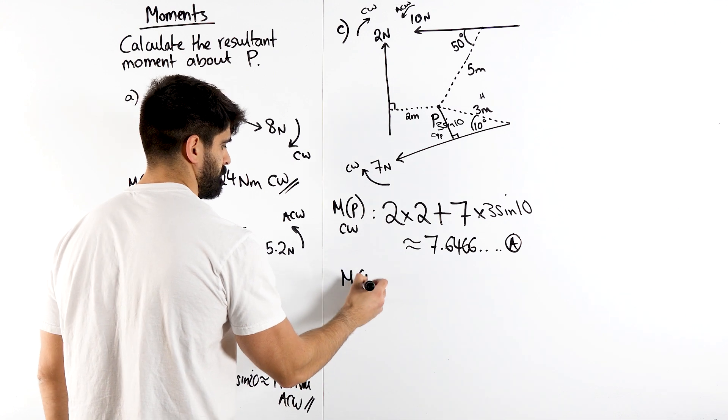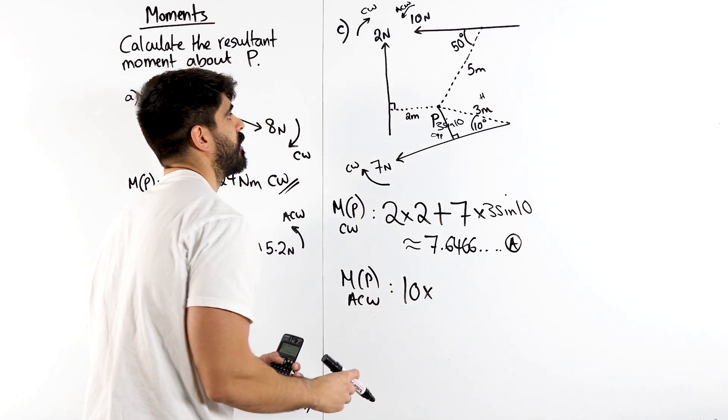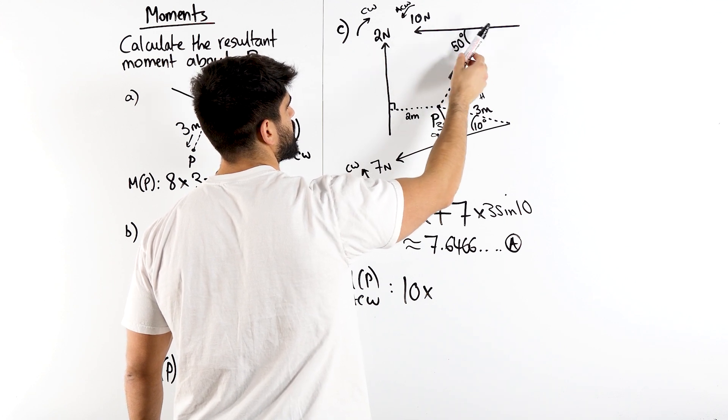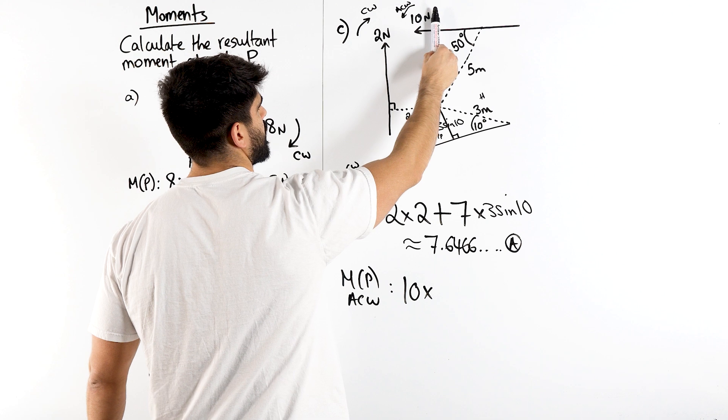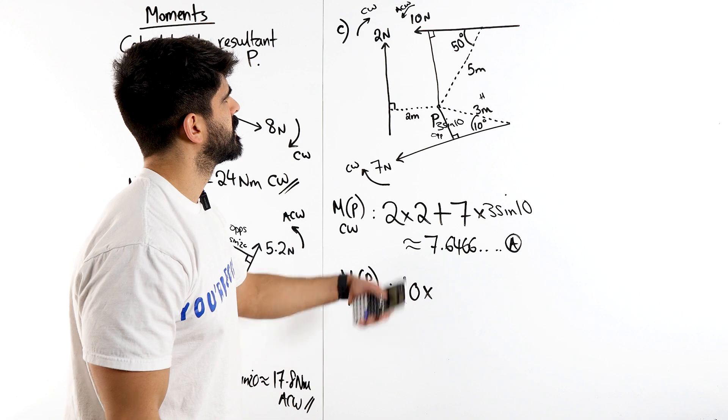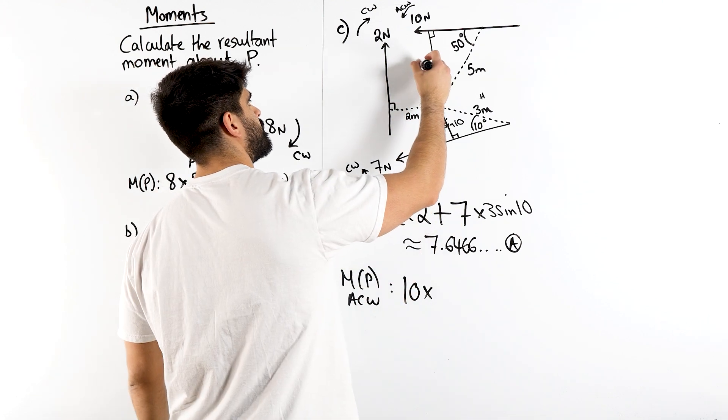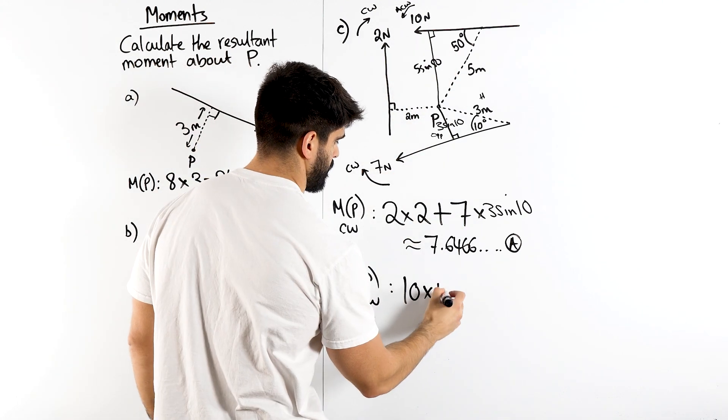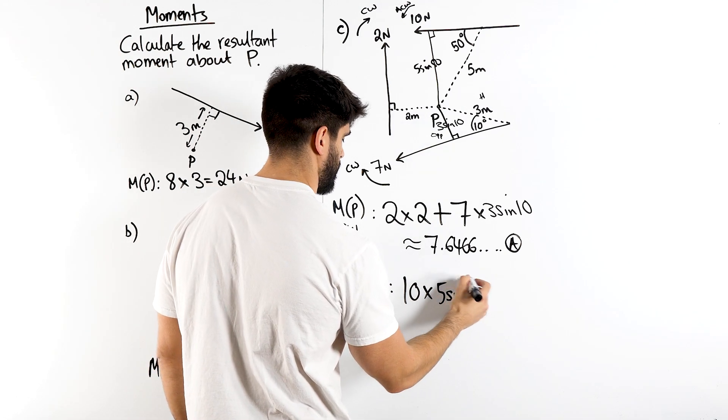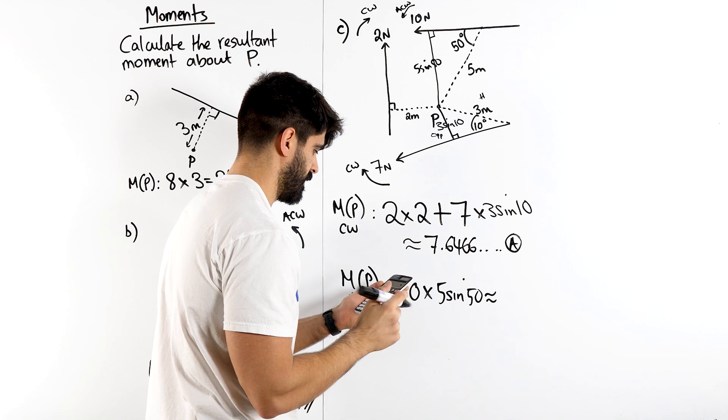Now let's look at the moment about p anti-clockwise. So the force anti-clockwise is 10 times. Now we need the shortest distance. The shortest distance is the one that is going to be perpendicular to this line. So that goes through p. Same thing. We have 5 in the hypotenuse and we want the opposite. So it's 5 sine 50. It's not always going to be sine. It's just the ones I chose happen to be like that. 5 sine 50, which is about 10 times 5 sine 50, 38.3.